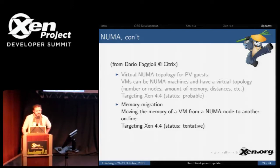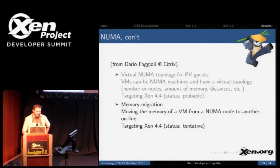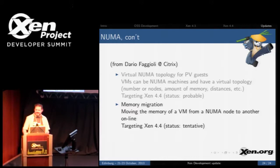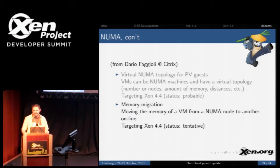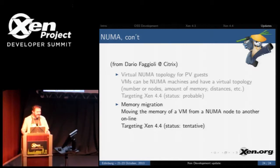Question: a lot of the new protocol work in Netfront and Blockfront looks very useful, but do you know how they're being adopted in Amazon, Rackspace, and public cloud infrastructure? Answer: I don't know. The improvements will get there eventually — and the Blockfront improvements don't need the backend server to be updated as well.